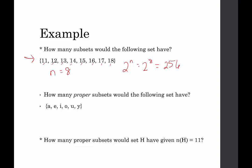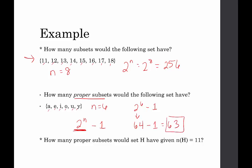How many proper subsets would the following set have? We have a, e, i, o, u, y — that's 1, 2, 3, 4, 5, 6 elements, so n is six. For proper subsets, that's two to the n then take away one: two to the sixth minus one. Two to the sixth is 64, minus one is 63. So there would be 63 proper subsets — all of the subsets except for the set itself.